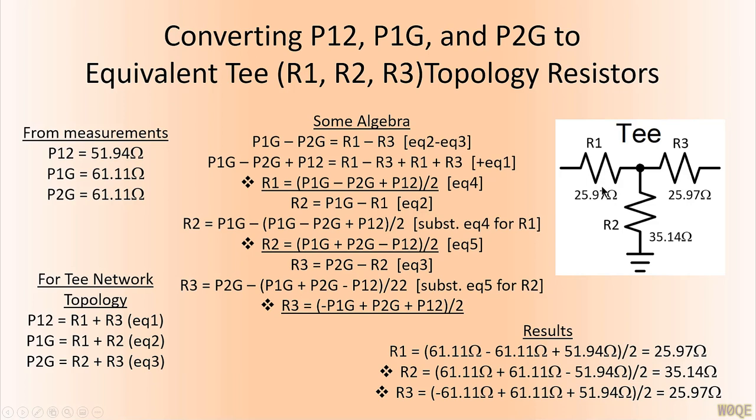The T attenuator is the easiest one to do. If we look at the T attenuator real quickly, we see P1-2 is R1 plus R3, as shown here. P1G would be R1 plus R2, and P2G would be R2 plus R3. Here's three equations and three unknowns. Unfortunately, we want these in terms of R1, R2, and R3, so we do some algebra. We take two of the equations, we subtract one from the other. We eliminate one of the variables, one of the R values. We substitute it back into a third equation, and we can get R1 equals this.